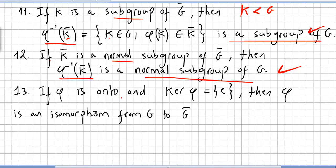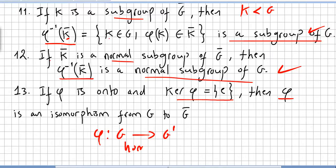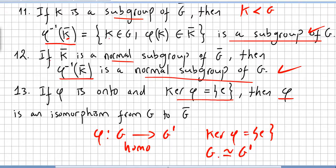If phi is a surjective homomorphism and the kernel of phi contains only the identity, then phi is an isomorphism from G to G-bar. So a homomorphism from G to G-bar that is surjective and has trivial kernel allows us to say that G is isomorphic to G-bar.